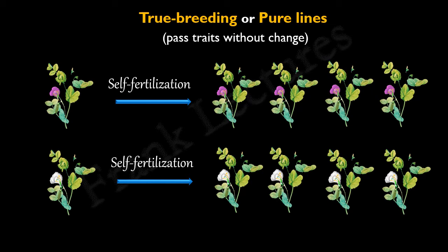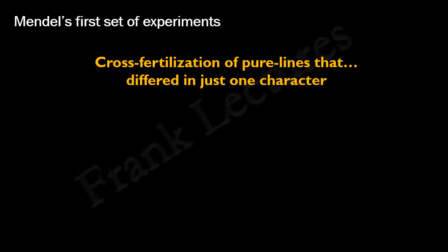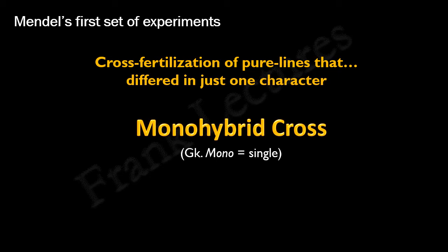The first set of experiments conducted by Mendel involved cross-fertilization of pure lines that differed in just one character. Such a cross is known as a monohybrid cross. Mono means single, referring to the single character of the pea plant. The two plants involved in this cross have different traits for that character, and hybrid refers to the offspring of this cross.